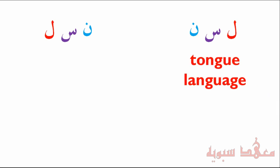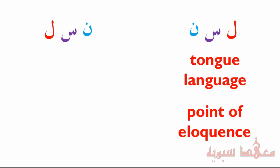Now let's get to the root that was actually used. It's the لام, the سين, and the نون — from this root we get the word for tongue: لسان. And لسان can also mean language. It's interesting that the tongue is the point of eloquence, and that's the way it's used in the Quran — for example when describing the hypocrites.